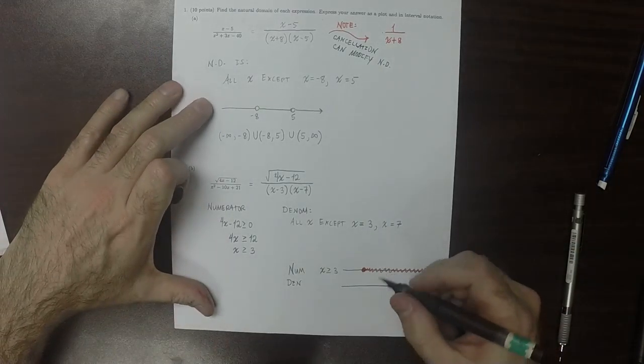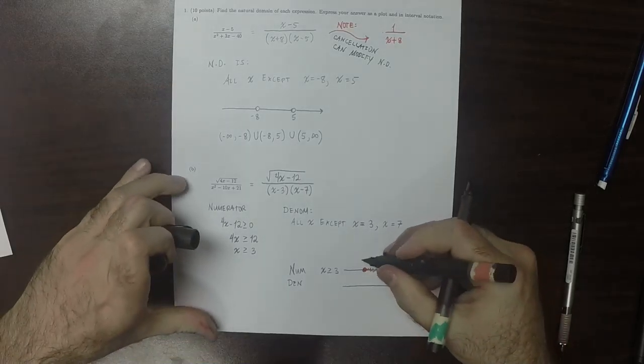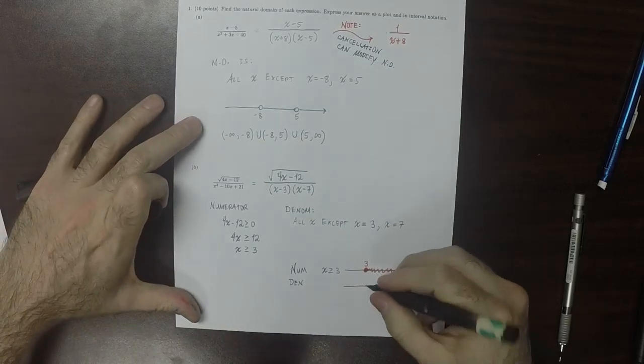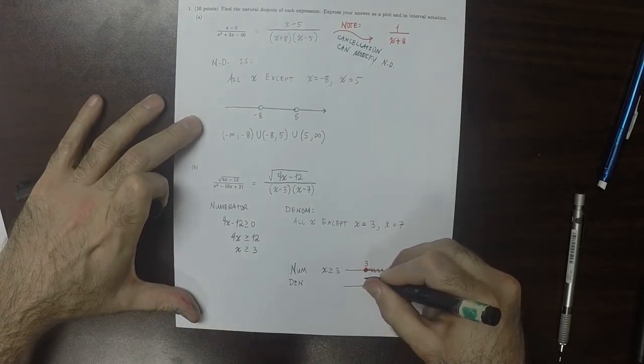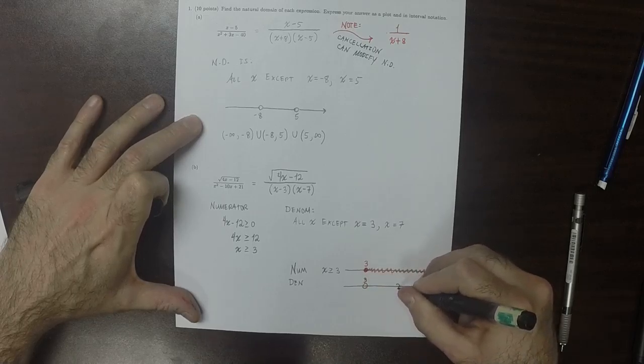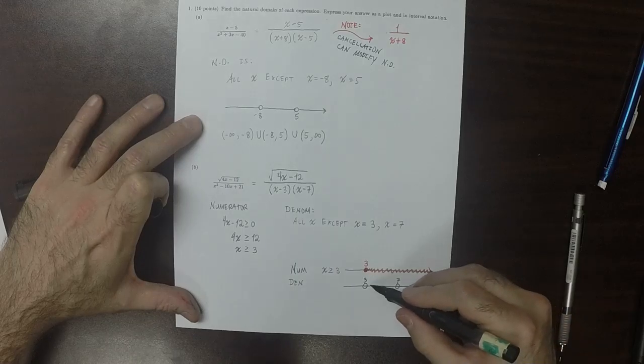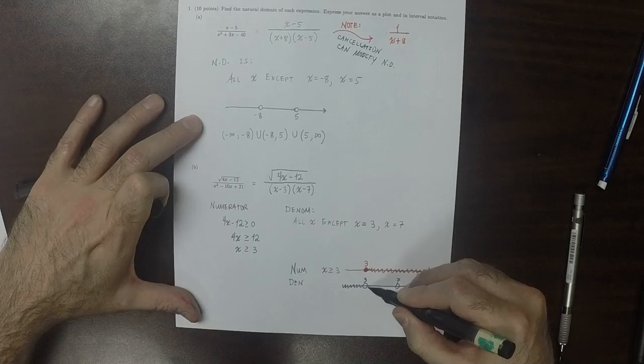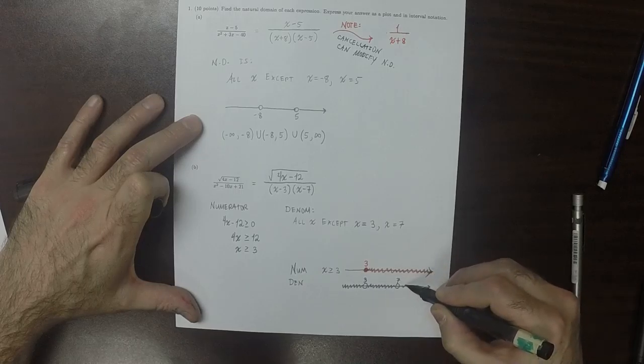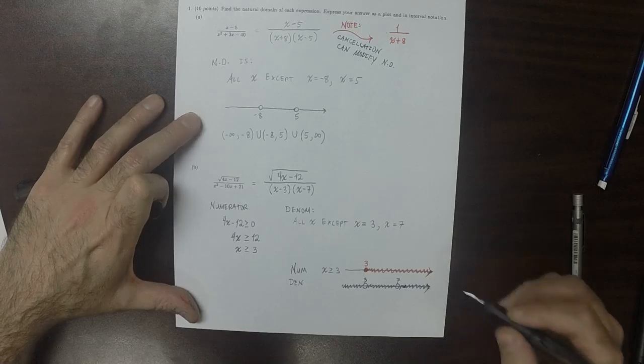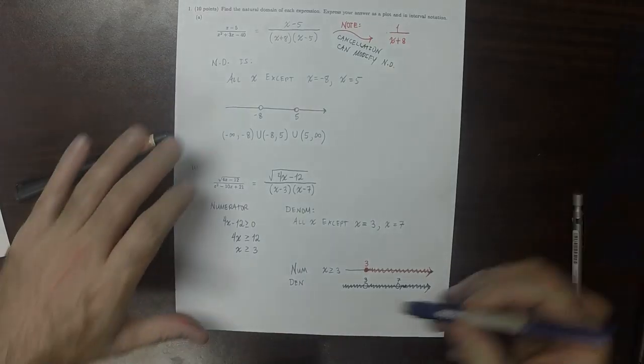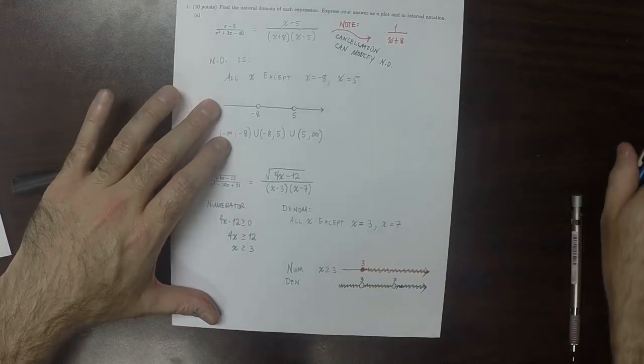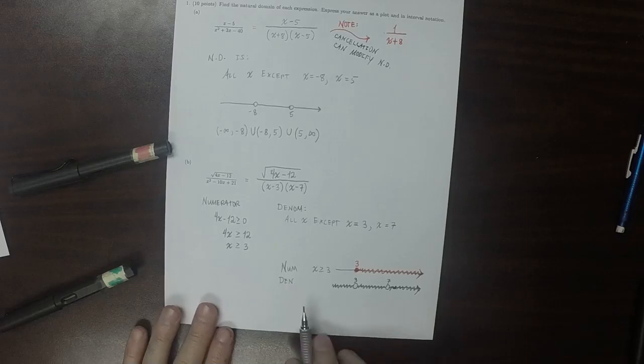The denominator requirement is anything but these. So drawing this, the numerator could be 3 and anything greater. The denominator is anything except a 3 or a 7. Otherwise, it could be anything in between. And what we need is we need to have both.